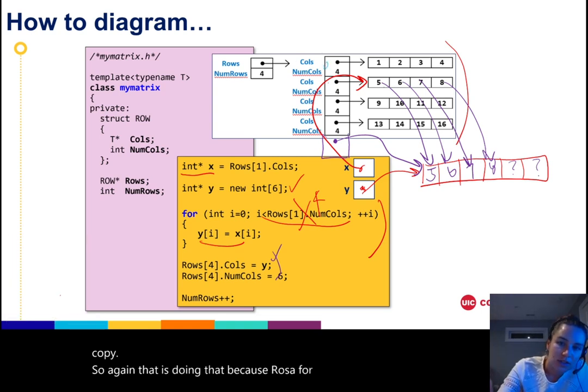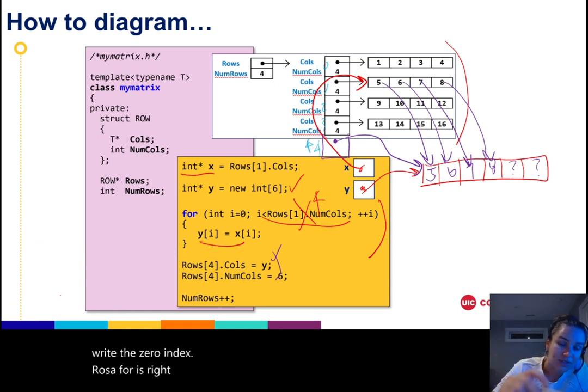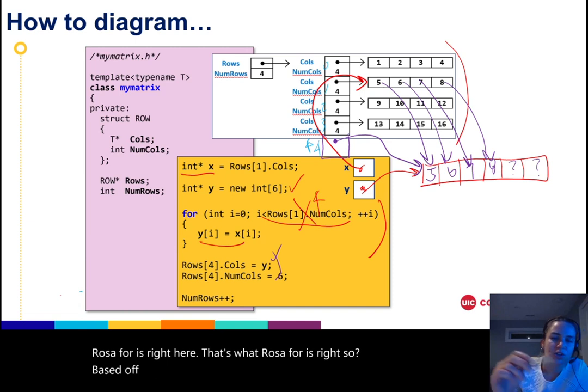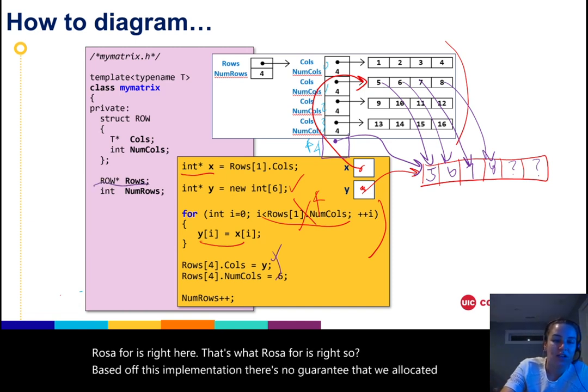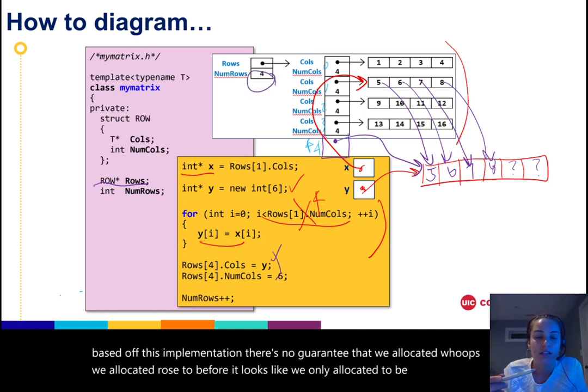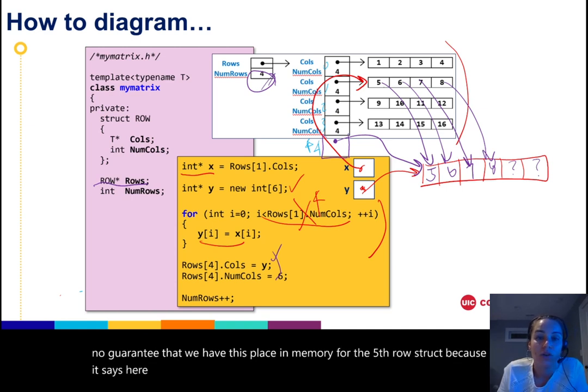Again, that is doing that because rows of 4—I feel like it's always useful to write the zero index—rows of 4 is right here. That's what rows of 4 is. Based off this implementation, there's no guarantee that we allocated... we allocated rows to be four. It looks like we only allocated it to be... sorry, there's no guarantee that we have this place in memory for the fifth row struct because it says here that we only have set out space for four spots, not five.